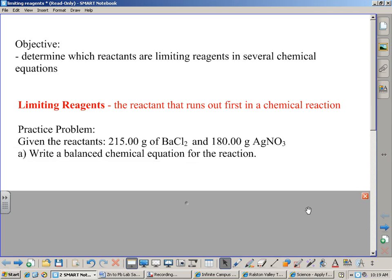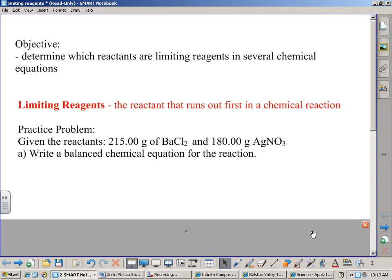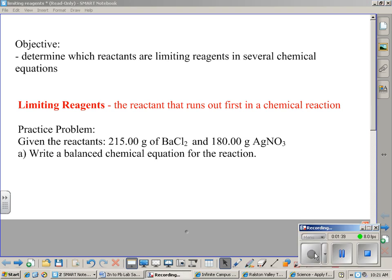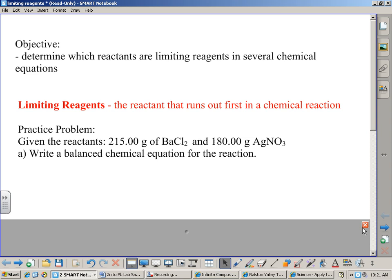All right, so our first example that we're going to do today, you have 215 grams of barium chloride and 180 grams of silver nitrate. I would like you to take the time to write a balanced chemical equation given that those are your two reactants. So I went a little easy on here because I didn't write these out as names, right? I gave you the formulas that you were starting with. So you know the beginning is going to be BaCl2 plus AgNO3. What type of chemical reaction are we looking at right now?